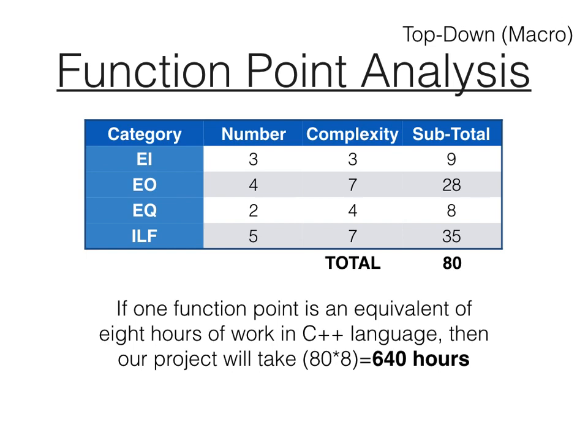Using historical benchmarks, we can calculate how long it's going to take to program a piece of software given the number of function points and their complexity. For example, if one function point is equivalent to eight hours of work in the C++ language, then our project is going to take approximately 640 hours to complete.